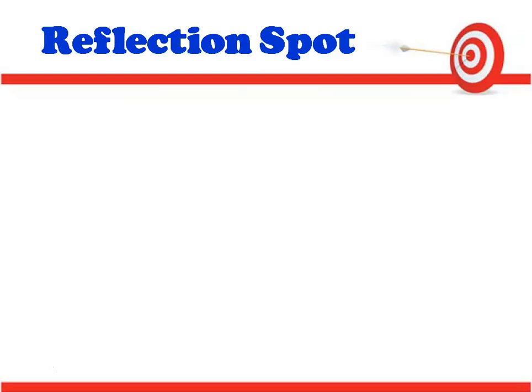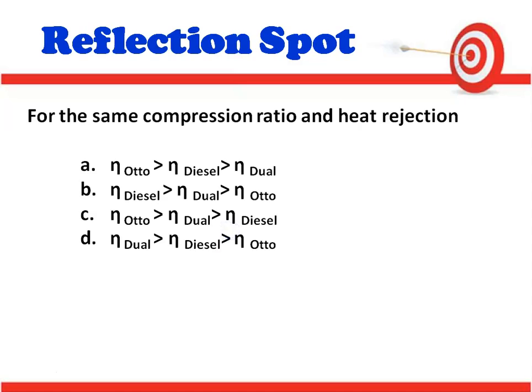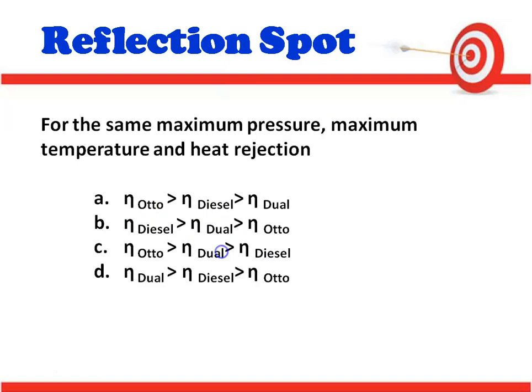At the reflection spot, two questions to test understanding. Question 1: For the same compression ratio and heat rejection, the correct answer is C — Otto cycle efficiency > dual cycle efficiency > diesel cycle efficiency. Question 2: For the same maximum pressure and maximum temperature, the correct answer is B — diesel cycle efficiency > dual cycle efficiency > Otto cycle efficiency.